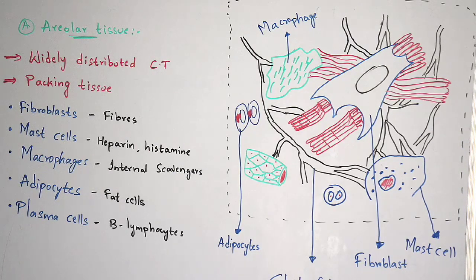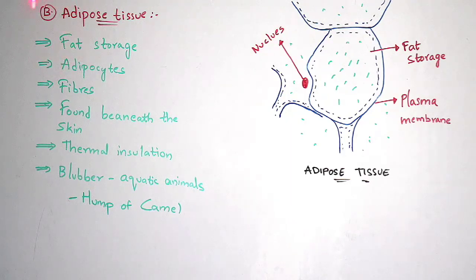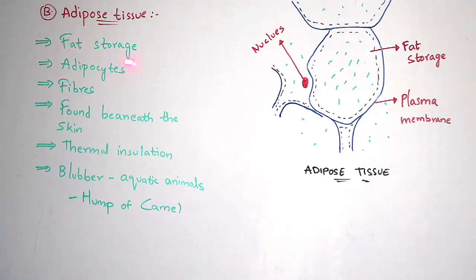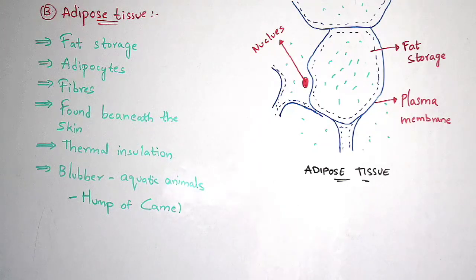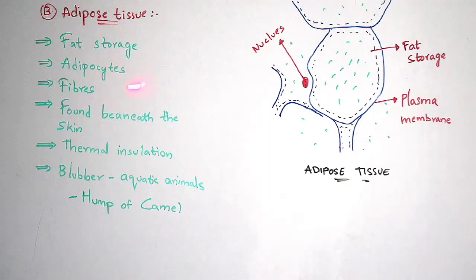Now let us discuss about adipose tissue, which comes under the second classification of loose connective tissue. Adipose tissue acts as a fat storage — it is a specialized tissue which mainly helps in fat storage. The fat content is stored in this adipose tissue, and it consists of adipocytes. It also contains collagen fibers and elastic fibers, but only in a less amount.